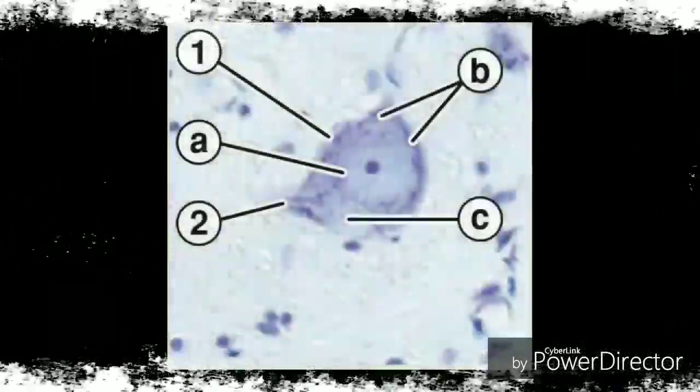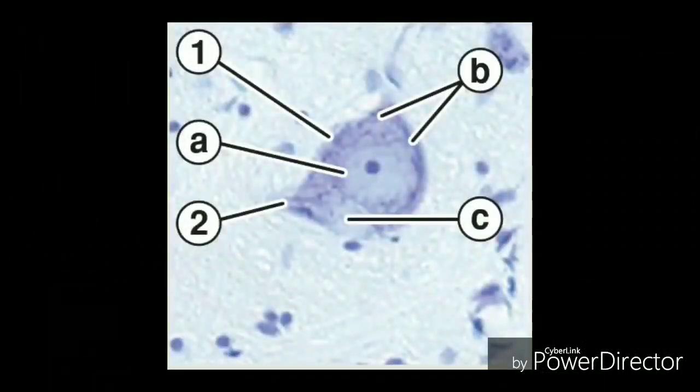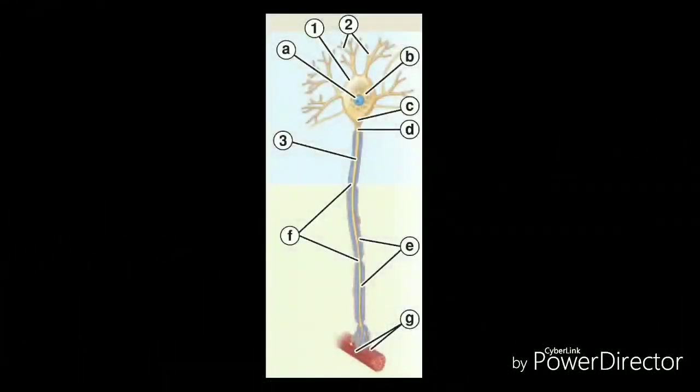Neural tissue is a specialized tissue with specialized functions. It is the main component of the nervous system, including both the central nervous system and the peripheral nervous system. This includes the brain, spinal cord, and other types of nerves. If we have to describe the functions of neural tissue, integration and communication are the main functions of this specialized tissue.